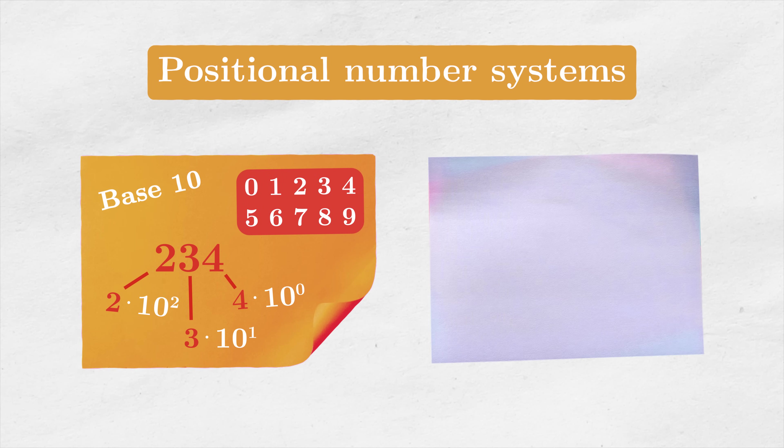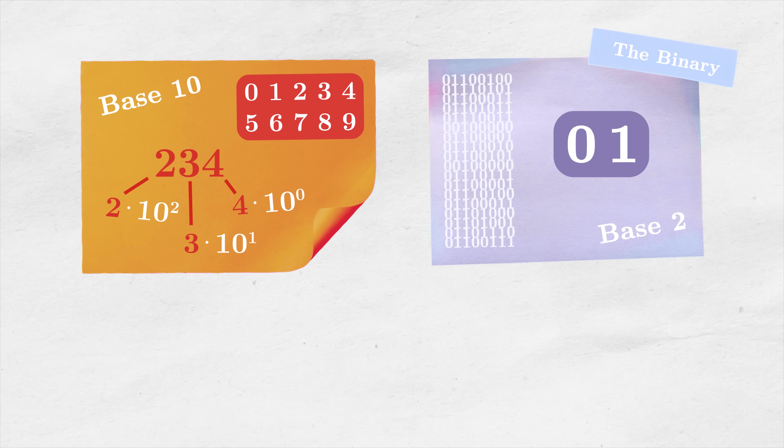You probably also know the binary system, where the only digits are 0 and 1. To make it more clear, let's see an example. The number 12, which is written in decimal, in binary would be 1100, because it is equal to 1 times 8 plus 1 times 4 plus 0 times 2 plus 0 times 1.